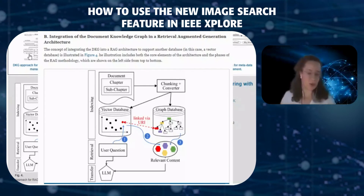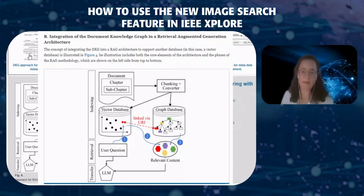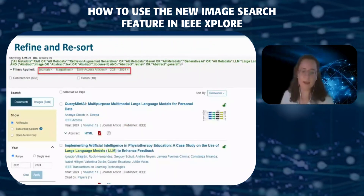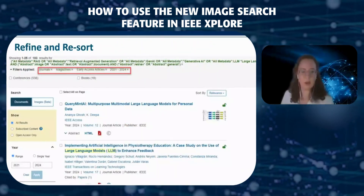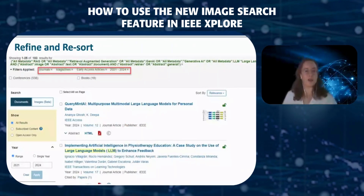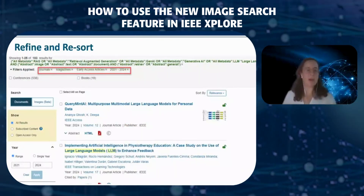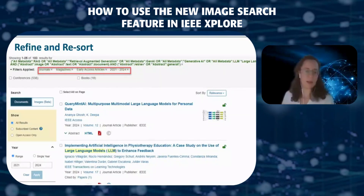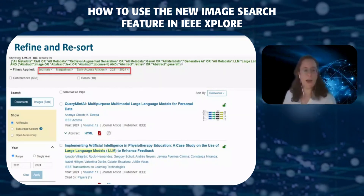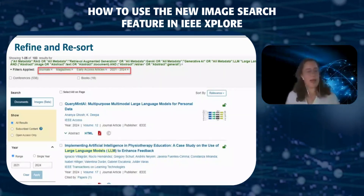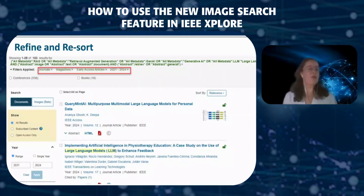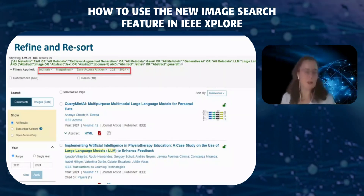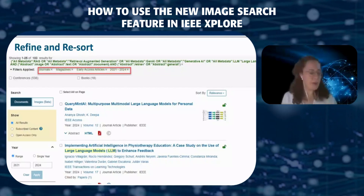Test this feature if your institution has an institutional subscription to IEEE Xplore Digital Library — you will see it enabled. The next step could be to refine and re-sort your search.